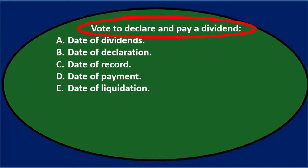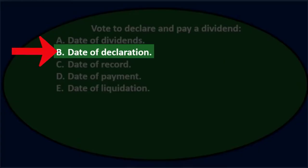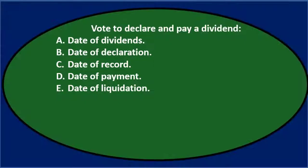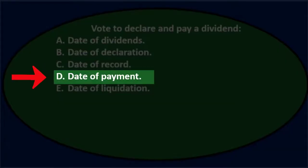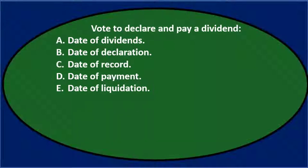Vote to declare and pay a dividend. A, date of dividends. B, date of declaration. C, date of record. D, date of payment. And E, date of liquidation.